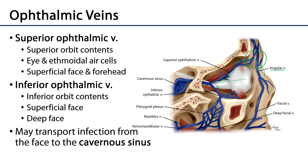If blood may flow in that direction, then infections may also follow. Infections of the superficial face may travel along these ophthalmic veins back into the cavernous sinus, and can therefore cause a cavernous sinus thrombosis, endangering any of the contents of the sinus or its wall — including the internal carotid artery and abducens within the sinus, as well as cranial nerves 3, 4, V1, and V2 running through the walls of the sinus.